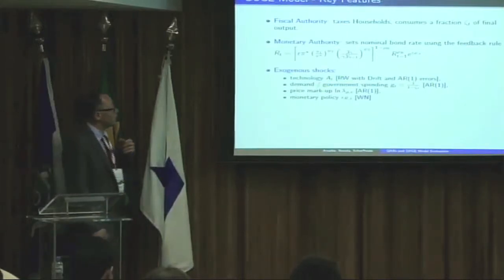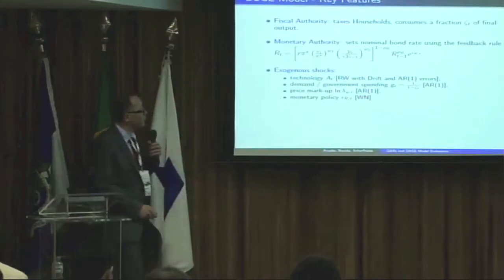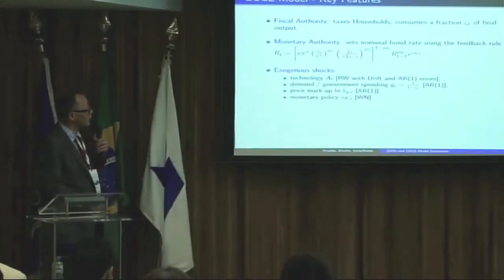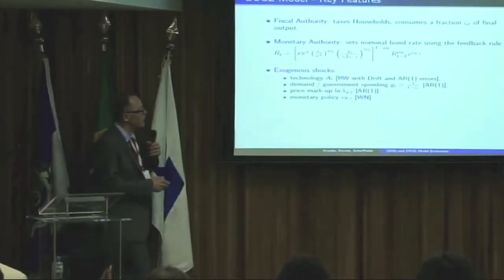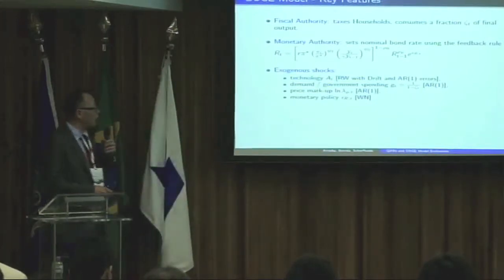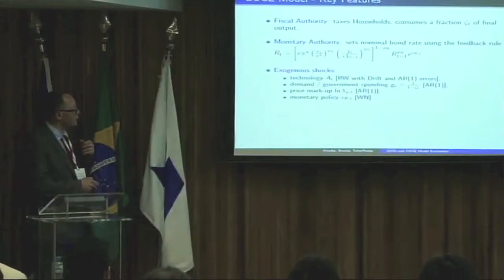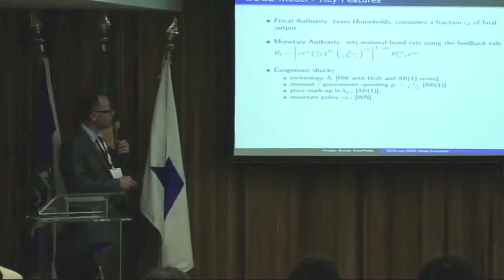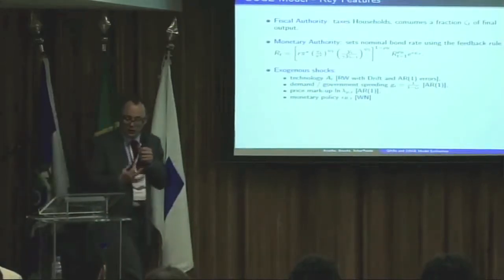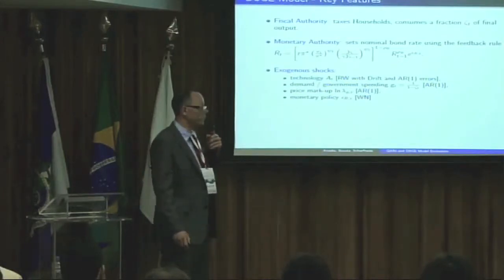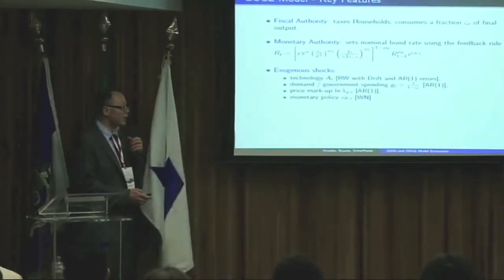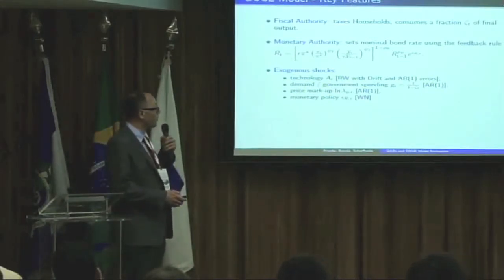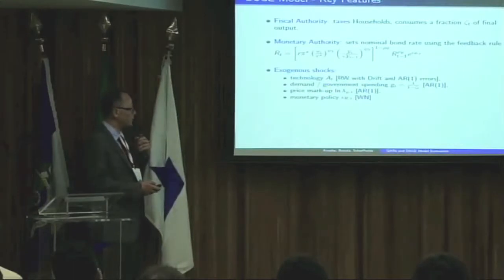The fiscal authority taxes households and consumes a fraction of final output. The monetary authority determines the nominal interest rate in response to inflation and output growth movements, with a monetary policy shock. Overall we have four exogenous shocks: technology, a general demand/government spending shock G, a price markup shock lambda, and the monetary policy shock. That's the description of the DSGE model — pretty standard except for the asymmetric wage and price adjustment costs.